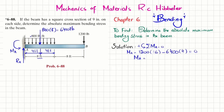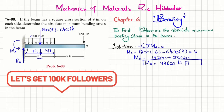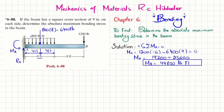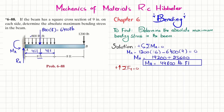From the moment equation: Ma equals 1200 times 16, which gives 19200, plus 6400 times 4, which gives 25600. Adding them, moment Ma equals 44800 pound-feet. Now for Ra, using sum of forces in the Y direction equals zero, with upward positive: Ra minus 6400 minus 1200 equals zero, giving Ra equal to 7600 pounds.